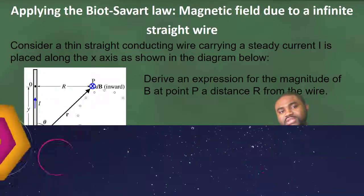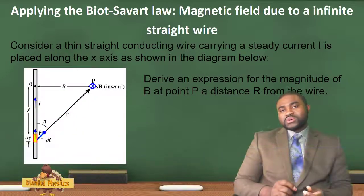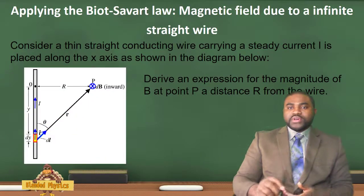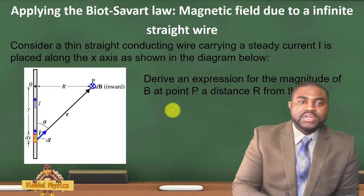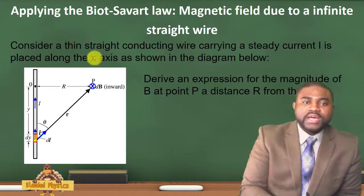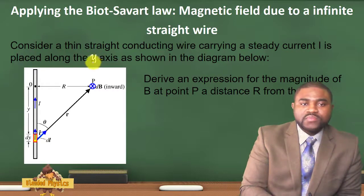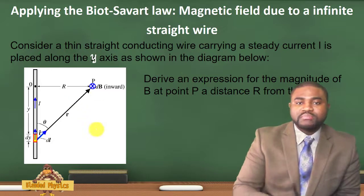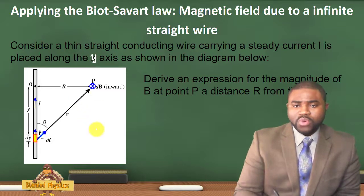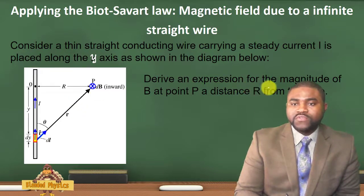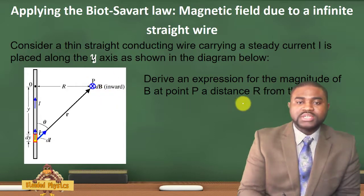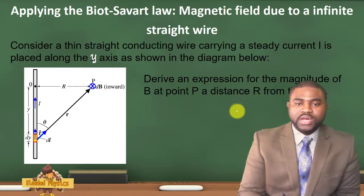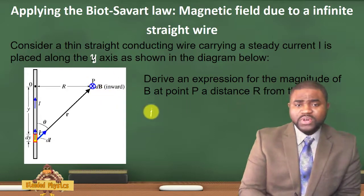Now let's consider a thin conducting wire carrying a steady current I placed along the Y-axis as shown in the diagram below. We are required to derive an expression for the magnitude of B at a point P, a distance R from the wire.